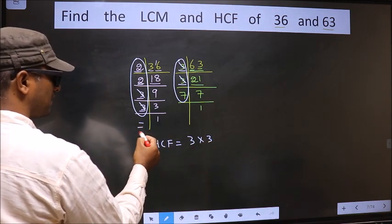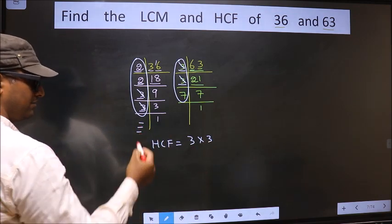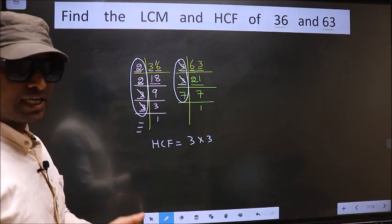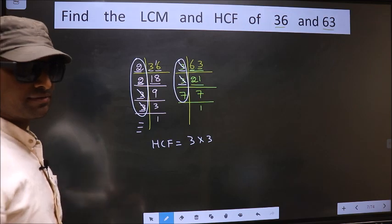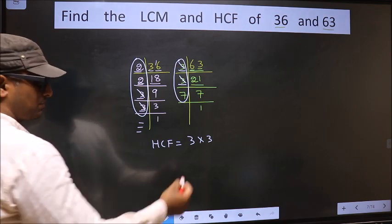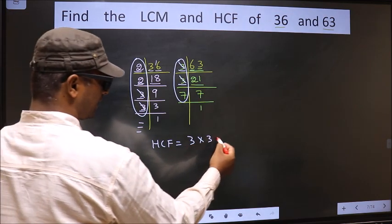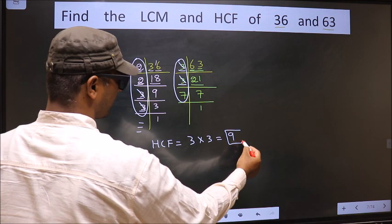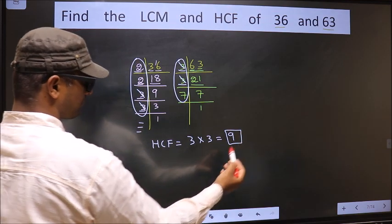No more numbers are left. Therefore our HCF is 3 into 3, which is 9. So 9 is our HCF.